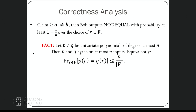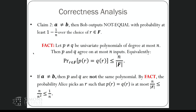The key fact guaranteeing a low probability of error is: if p and q are univariate polynomials of degree at most n, then p and q can agree on at most n inputs. This is equivalent to saying a degree-n polynomial has at most n roots. Therefore, the probability over the random choice of r that p and q agree at that input, when they're not the same polynomial, is at most n over the field size. We chose the field size to be n squared to ensure the failure probability is at most 1/n.